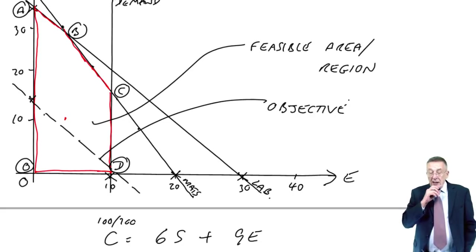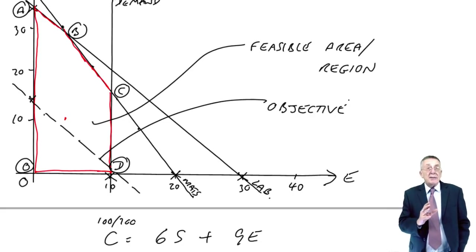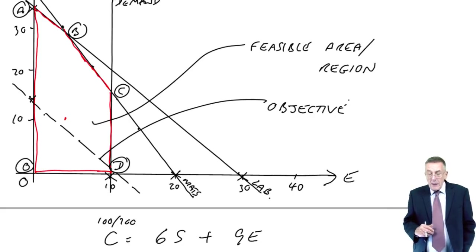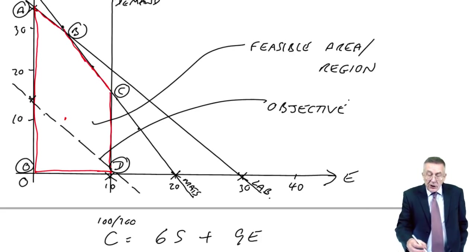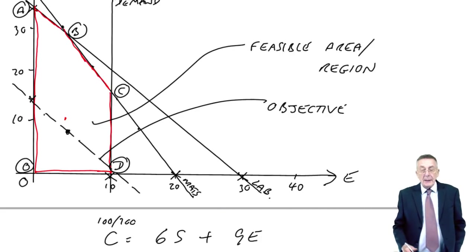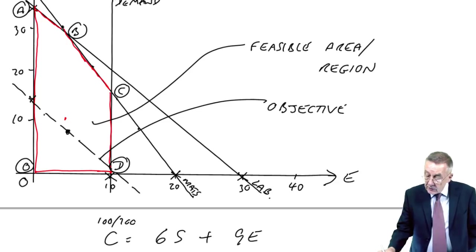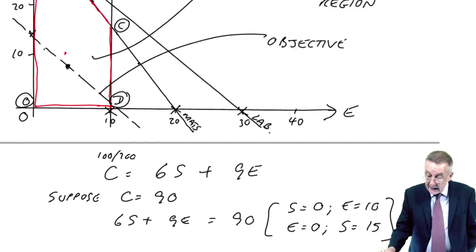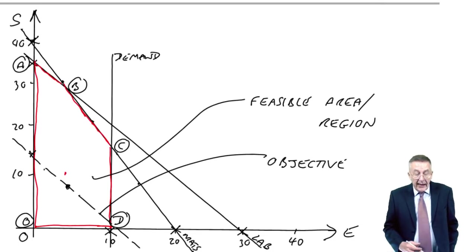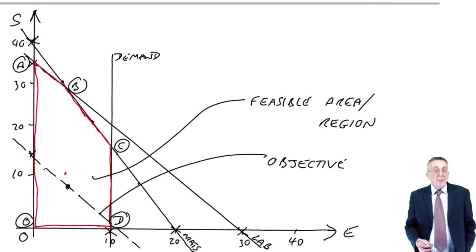Now then, this is the bit to listen to carefully and make sure you've got: any combination on that dashed line would give me a contribution of 90. But again, I don't know what the contribution is going to be.